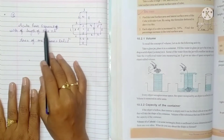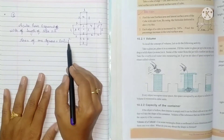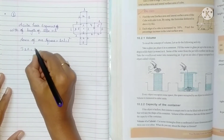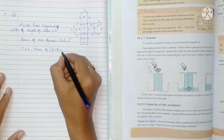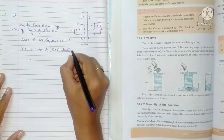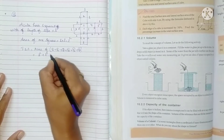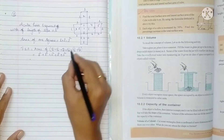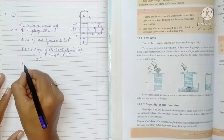A cube has six squares, each with a side of length L. The area of one square is side × side = L². So the total surface area is the area of all six faces: L² + L² + L² + L² + L² + L² = 6L². Therefore, the total surface area of a cube is 6L².